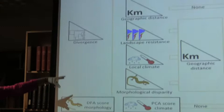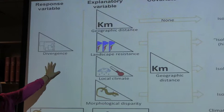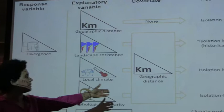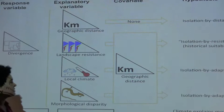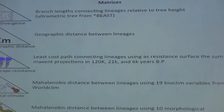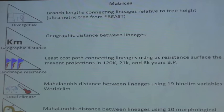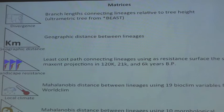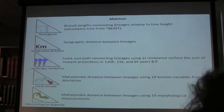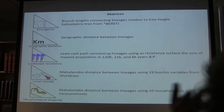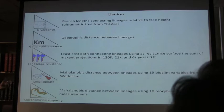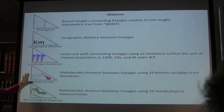Here are the population genetic hypotheses in terms of distance matrices. The response variable is always divergence; the explanatory variables are geographic distance, habitat resistance, climate distance, and phenotypic disparity. I used a species tree with branch lengths to calculate distances among lineages. I used Maxent maps to calculate historical connectivity as a resistance surface. I used Mahalanobis distance between locations using 19 bioclim variables for the climate matrix, and also Mahalanobis distance with morphological measurements.